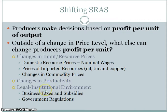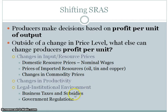The next determinant is the legal and institutional environment, which includes taxes and subsidies. Taxes are an additional cost placed on businesses, so that would decrease the SRAS. Subsidies are kind of like a tax break where businesses are given money, so that would increase the SRAS or shift it to the right. Government regulations are usually seen as a cost, so government regulations would decrease the SRAS.